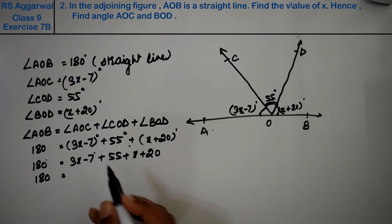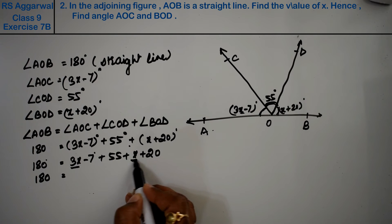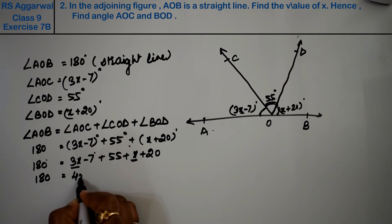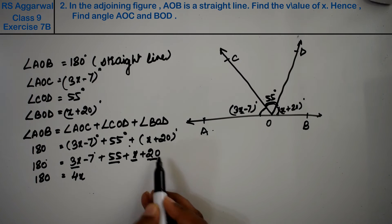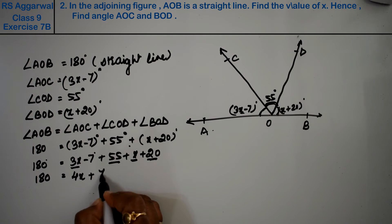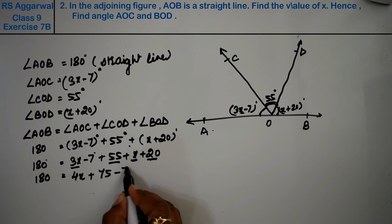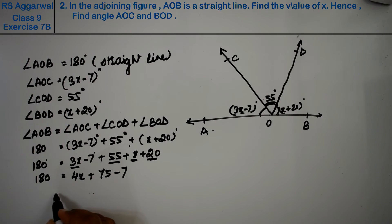180 equals the x terms together: 3x plus x is 4x. Now 55 plus 20 is 75, and this was minus, so minus. Now these come to the other side.